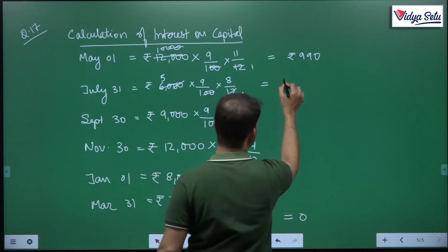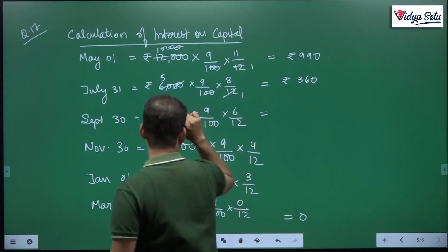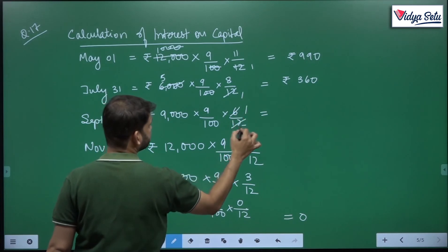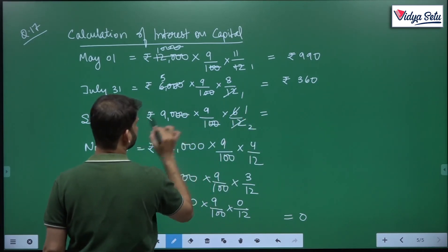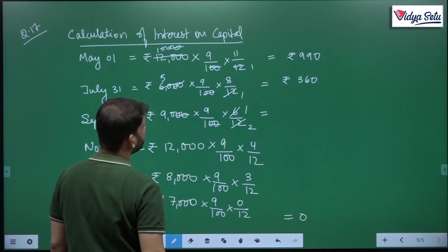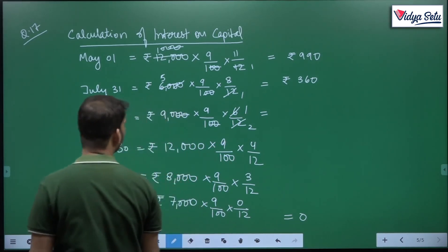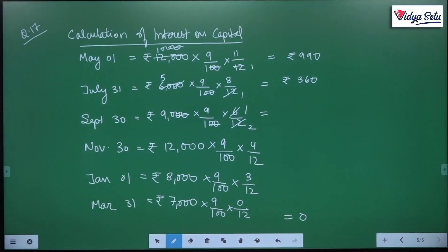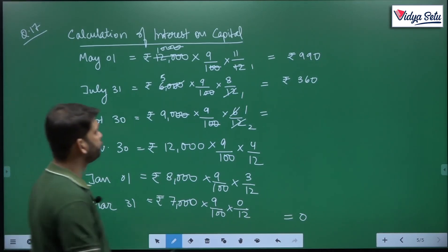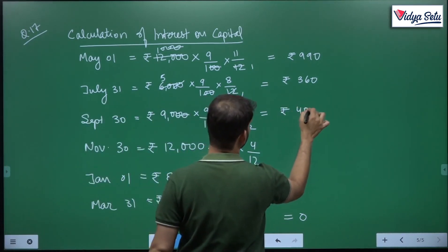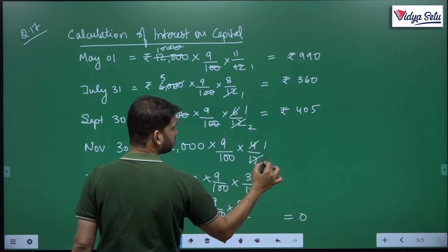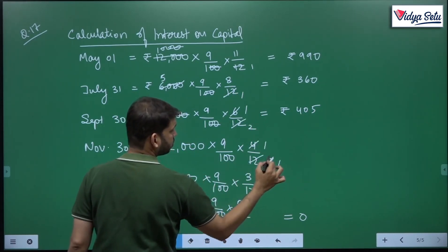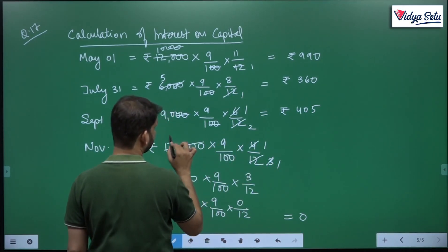Then we have 9,000 × 9% × 6/12 which comes to 405.